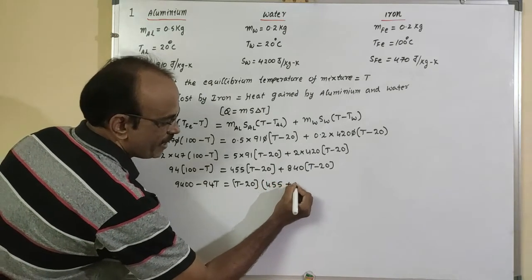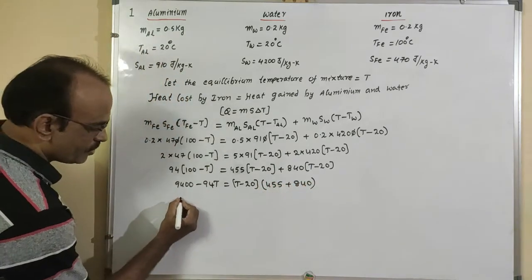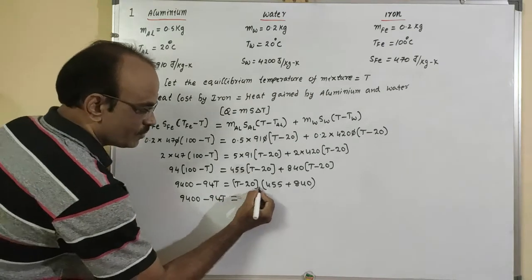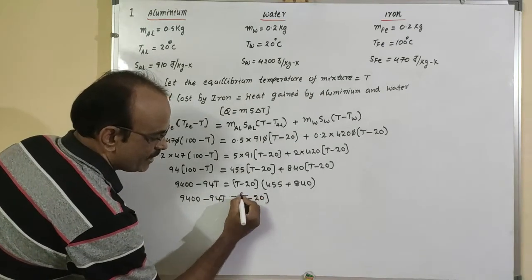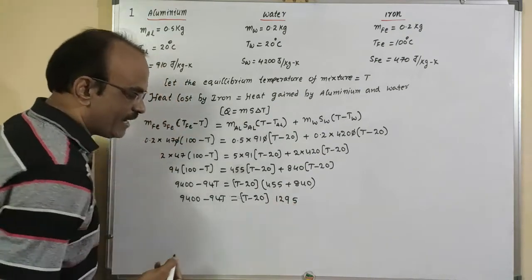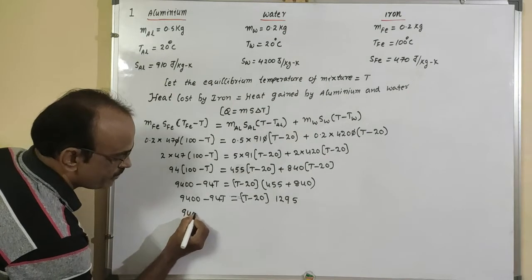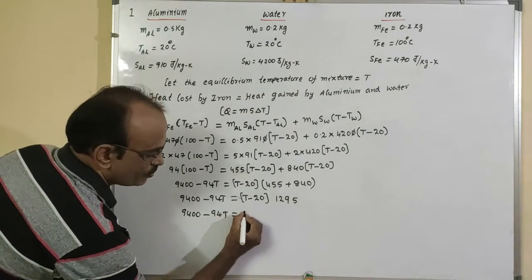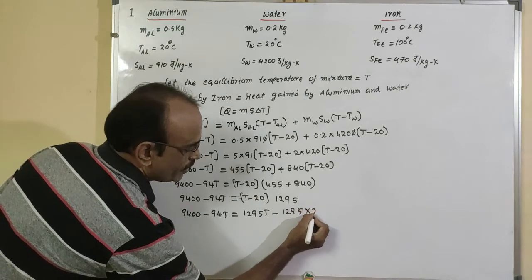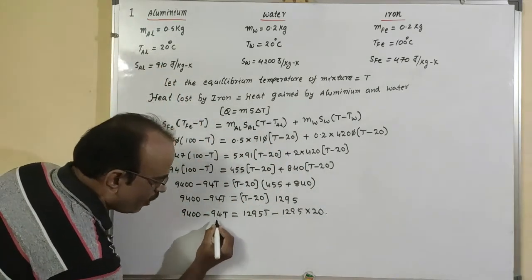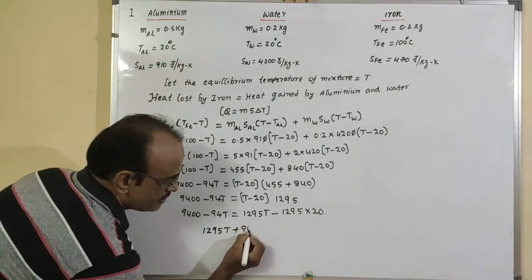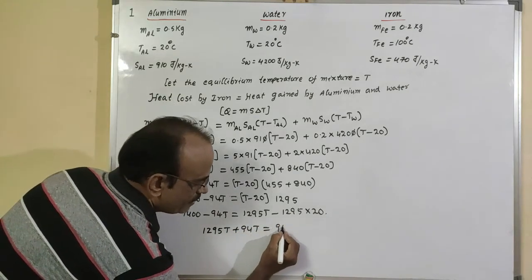Combining the right side: 455 + 840 = 1295. So the equation becomes: 9400 − 94T = 1295 × (T − 20), which expands to 9400 − 94T = 1295T − 25900.